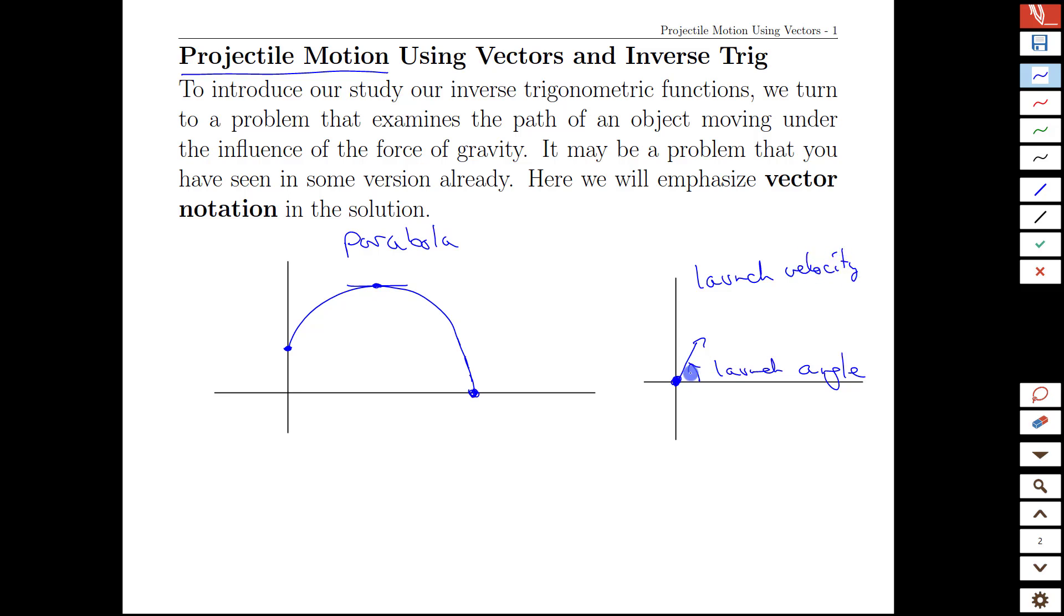When we frame the question of what happens to the projectile after launch based on those inputs, we can represent it most naturally using vector-value notation. We're going to see some interesting arrivals of trig functions in this process, which aren't really obvious in the parabolic form, and we'll see how that leads to a discussion of inverse trig functions later on in this unit.